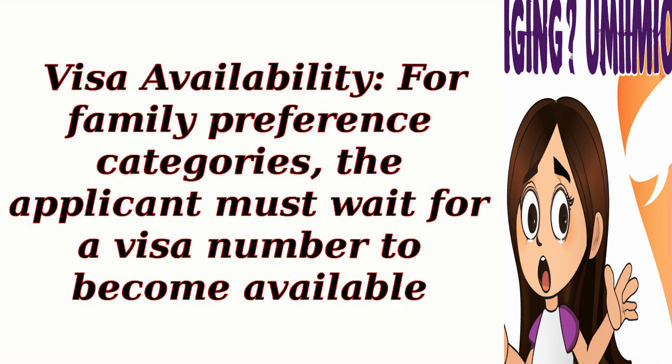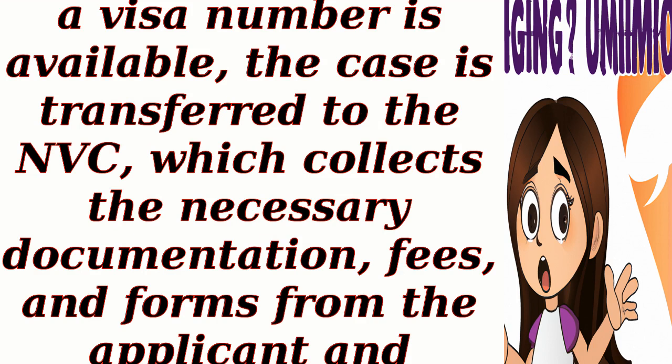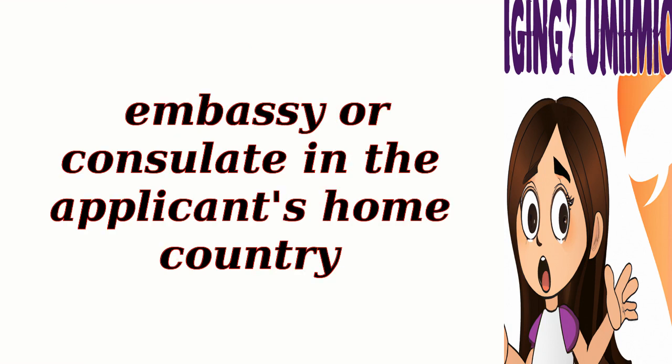Visa Availability. For family preference categories, the applicant must wait for a visa number to become available. The availability is determined by the priority date, which is the filing date of the immigrant visa petition. National Visa Center, NVC. Once a visa number is available, the case is transferred to the NVC, which collects the necessary documentation, fees, and forms from the applicant and schedules an interview at the U.S. Embassy or consulate in the applicant's home country.